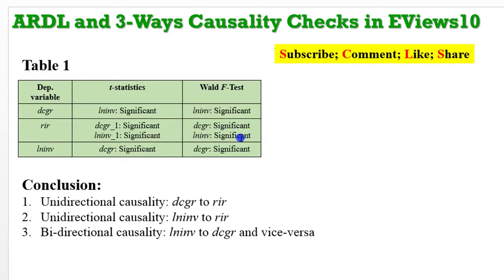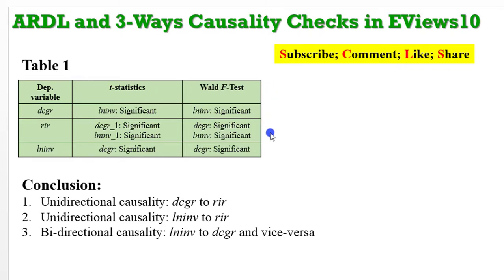As a recap, this was the outcome of what we obtained when we did the regressions using the t-statistics and when we conducted the Wald test. We concluded that there was a unidirectional causality from domestic credit growth to real interest rate, same unidirectional causality from investment to real interest rate, and a bidirectional causality from investment to domestic credit growth. So let's see whether the third check will be different or will be a confirmation of this.